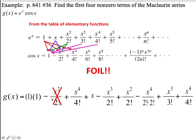I see that I have an x squared over 2 factorial: a negative 1 and a positive 1. So those are going to cancel. My x cubed terms don't cancel — they have different denominators. My x to the 4th terms, I'll have to do some math there. So it looks like I might have 1, 2, 3, 4 non-zero terms. I had to go out to a 4th degree because these 2nd degree terms cancel out.